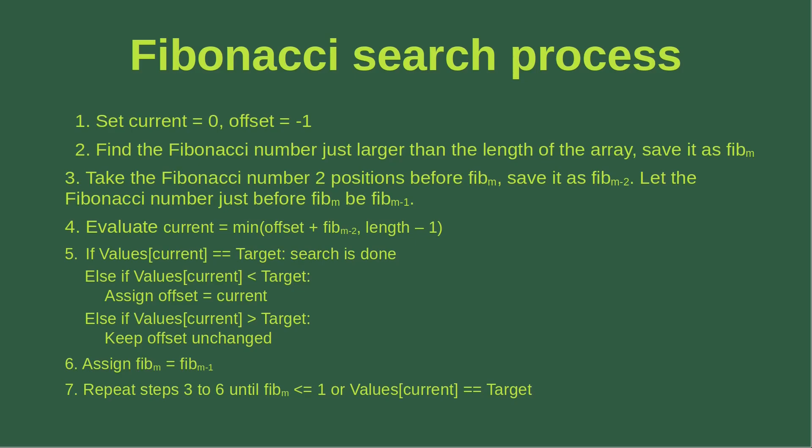After that, I change Fibonacci M to Fibonacci M minus 1, meaning I want to take the previous Fibonacci number as the current Fibonacci number. Finally, I have to repeat steps 3 to 6 until the condition is met: Fibonacci M is smaller than or equal to 1, or the target is found, meaning the current index gives me a value equal to the target.